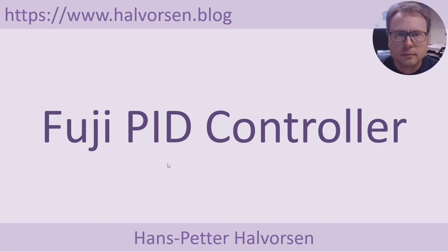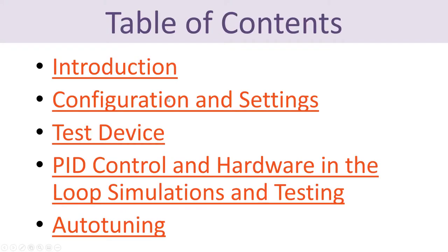In this video I will give an overview of a Fuji PID industrial PID controller. Here's the contents of this video: first, a short introduction; how you configure and set different settings on this Fuji controller; then I will test the device and see if it's working as expected. I will use a simple test program and connect it to your computer using a DAC device. Then I will use the Fuji controller as a PID controller and run it in hardware-in-the-loop simulation and testing mode using a software application connected to a DAC device. Finally I will show how you can use the built-in auto-tuning feature in this PID controller.